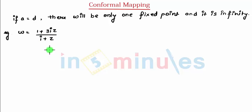We need to find fixed point of this. For finding fixed point, I can say a simple solution where we need to keep W is equal to z. So here I can say z is equal to 1 plus 3iz divided by i plus z.